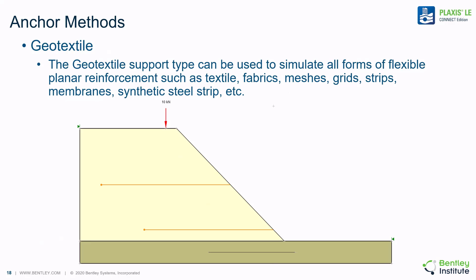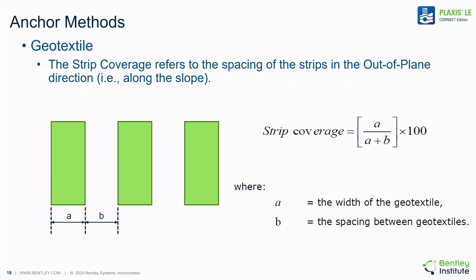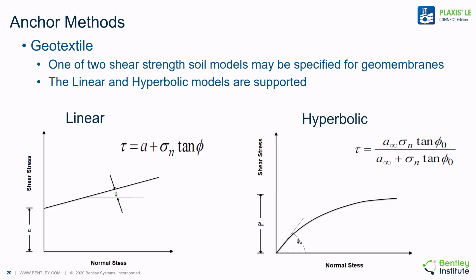The geotextile support type in the software can be used to simulate multiple forms of flexible planar reinforcement. Examples include textiles, fabrics, meshes, grids, strips, membranes, and synthetic steel strips. Geotextile supports can be easily and graphically placed on the interior of any model, and they only become effective if the slip surface passes through the geotextile support. The strip coverage is calculated according to the width of each slip and the spacing between the strips in the slope, approximating 3D conditions in 2D. It is also possible to specify the method by which shear strength of the geotextile is calculated; the software implements both linear and hyperbolic shear strength functions. The slip surface must pass directly through the geotextile in order to engage the shear strength of the geotextile.